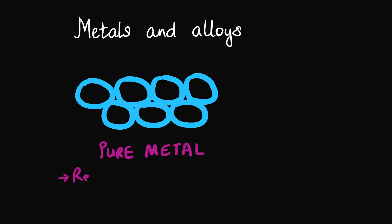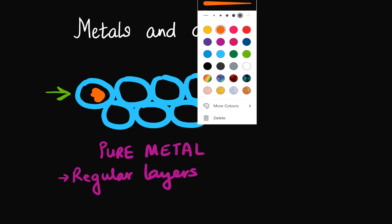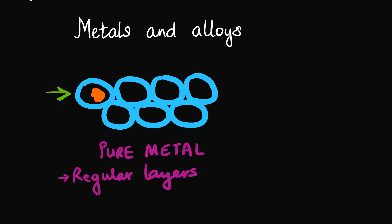So they are arranged in regular layers. Therefore what happens when a force is applied? Suppose I apply a force on this end of the top layer, you can expect that every atom is going to shift a bit to the right. So this will move a bit to the right, this will move a bit to the right, similarly this and this one. So eventually you will find that every metal atom will have shifted to the right by a small amount.